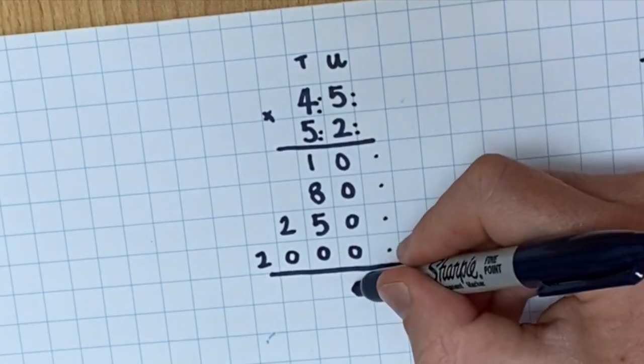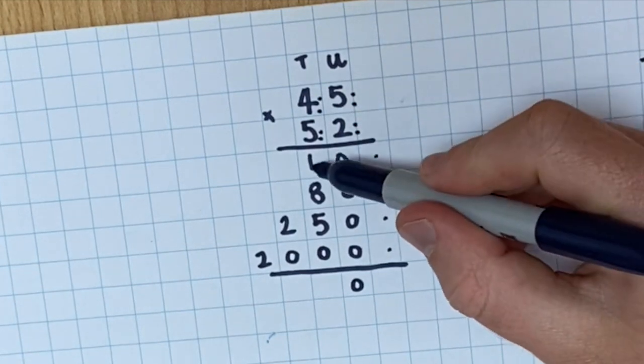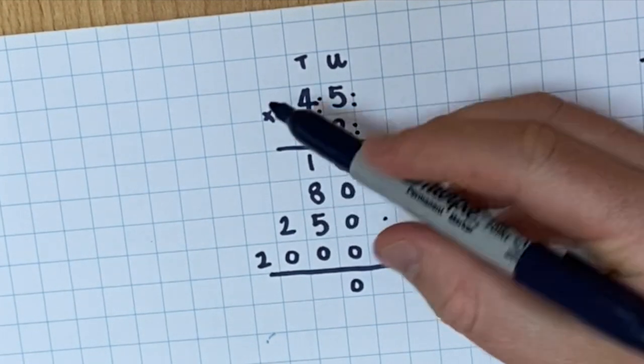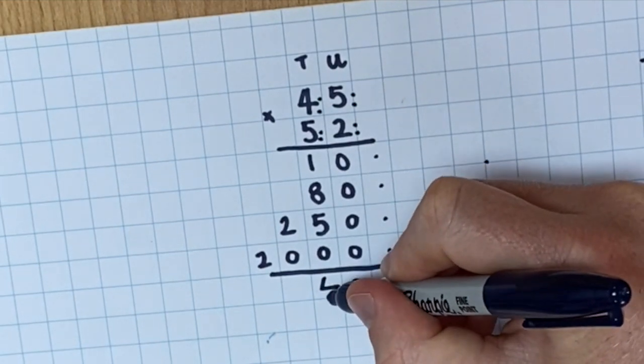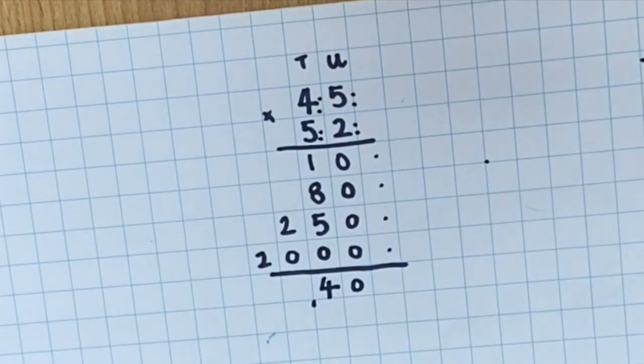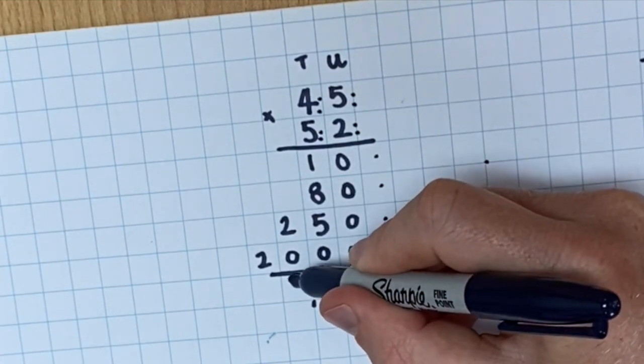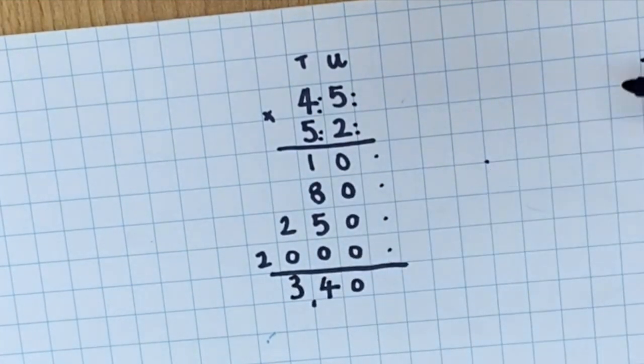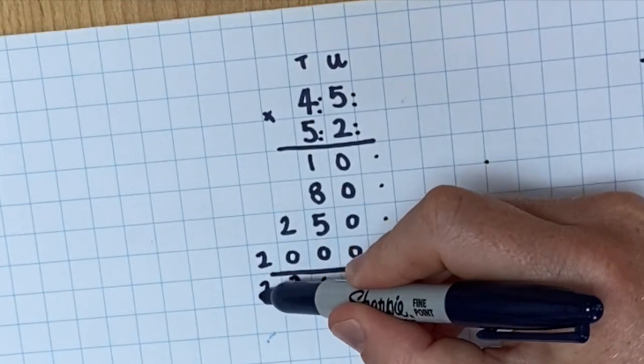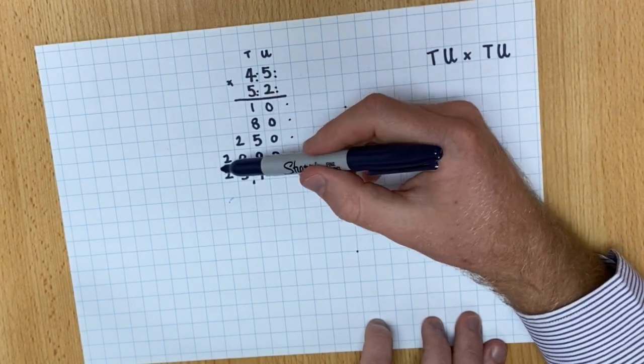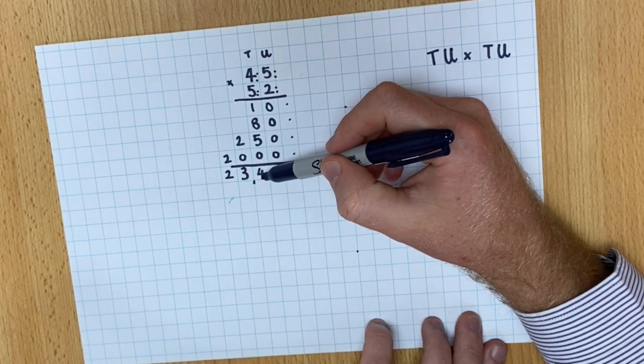So 0, add 0, add 0, add 0 is 0. 1 plus 8 is 9, plus 5 is 14. There's my 1 to carry. 2, add 0, add the 1 to carry is 3. And then 2 on its own is 2. So 45 multiplied by 52 is 2340.